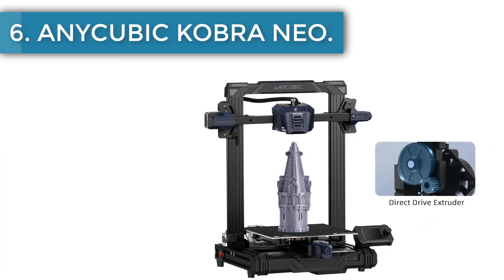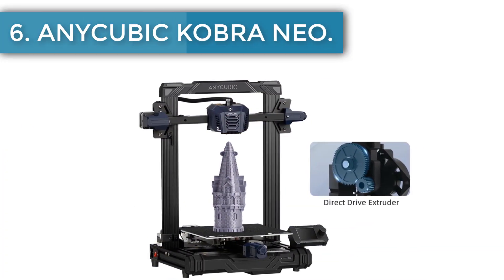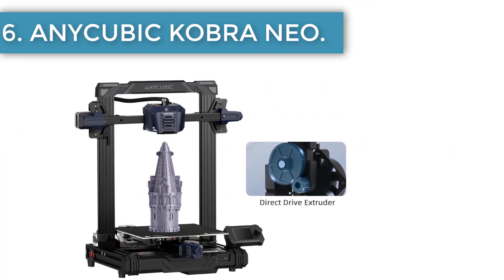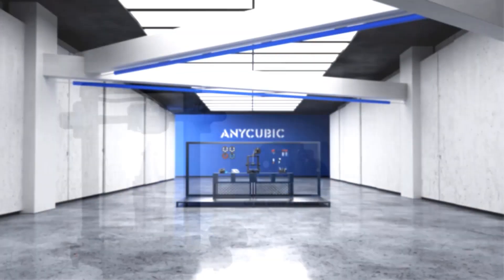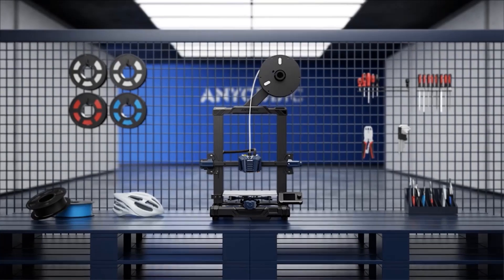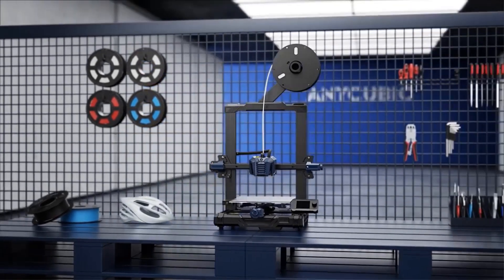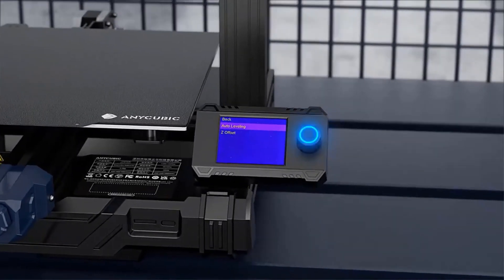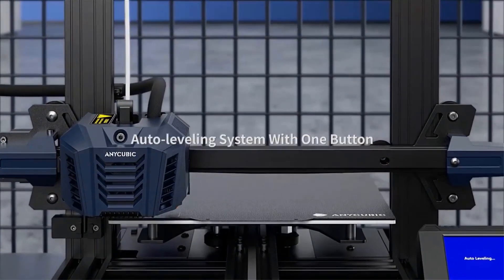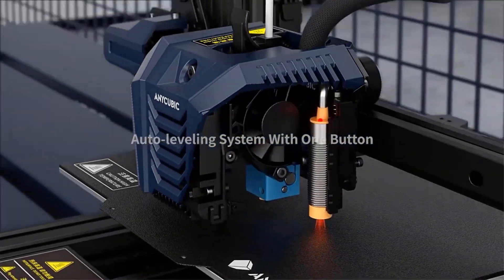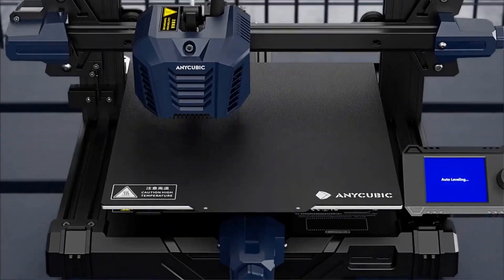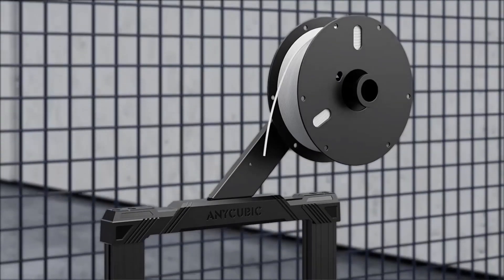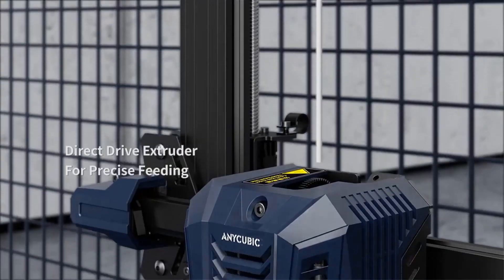Number six, Anicubic Corbraneo. Based in Shenzhen, China, Anicubic is a big name in the Chinese world of 3D printing equipment and one of the featured brands on AliExpress. Characterized by the Keep It Simple motto, the Corbraneo 3D printer is one of the best options for FFF printing. With a printing size of 25 by 22 by 22 cm, it is suitable for large-scale printing.